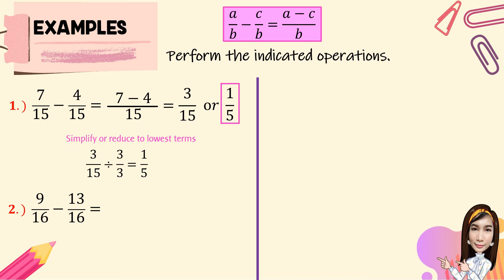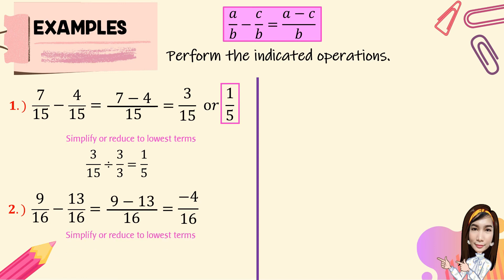For number 2, we have 9 over 16 minus 13 over 16. We subtract the numerators and copy the common denominator, 16. Using the rule of subtraction, negative 13 is greater than positive 9, so the result is negative 4 over 16. Negative 4 over 16 can be simplified — the greatest common factor is 4. Negative 4 divided by 4 is negative 1, and 16 divided by 4 is 4. So the lowest term is negative 1 over 4.